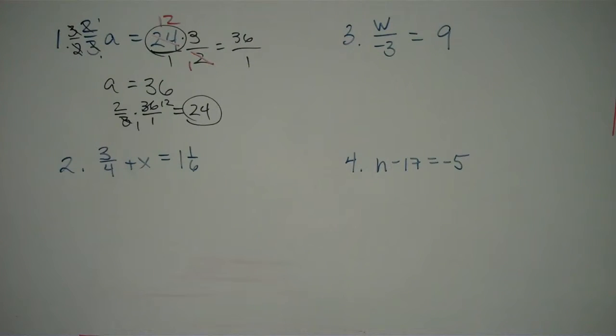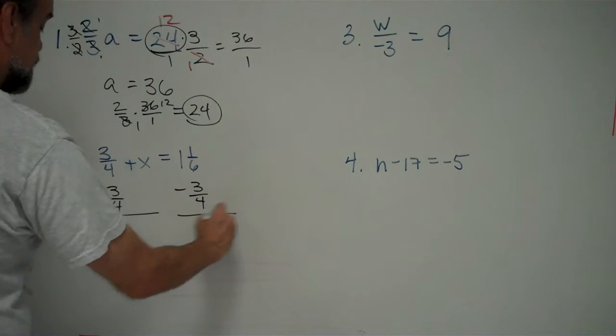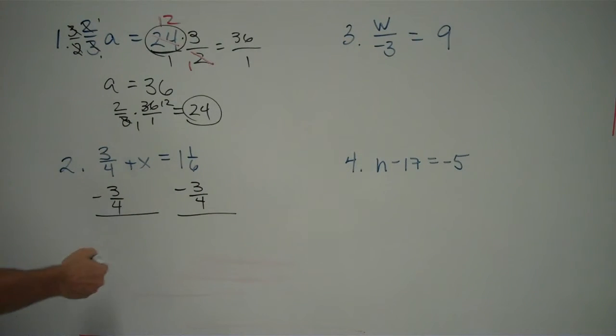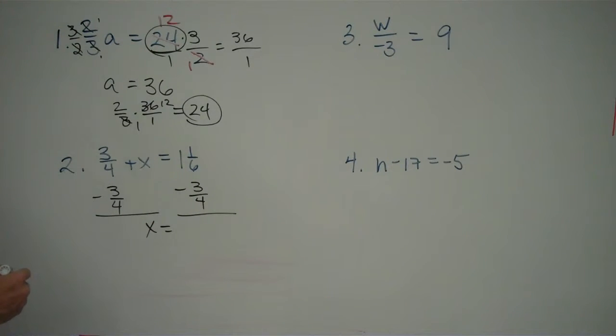Now, let's look at the next one. Next problem, we have 3 fourths plus x equals 1 and a sixth. Oh, my goodness, fractions. Well, let's look at what's happening. What is happening to x? What is happening to my unknown? I'm adding 3 fourths to it. So, how am I going to solve this? I'm going to subtract 3 fourths from the left side and also from the right side of my equation. On the left, 3 fourths minus 3 fourths is 0, plus x gives me x. On the right, I've got fractions to deal with.